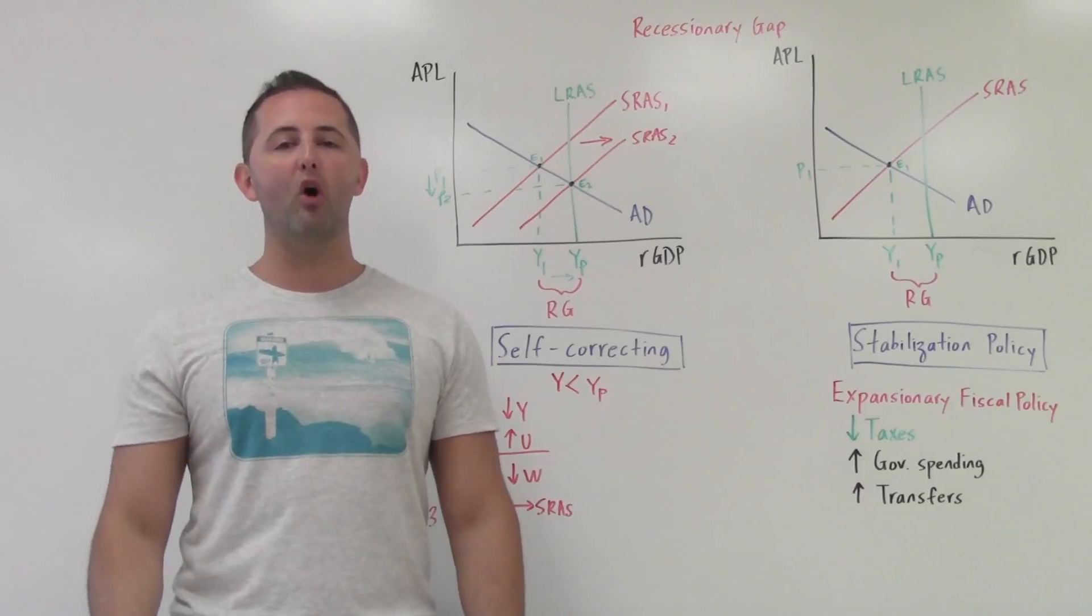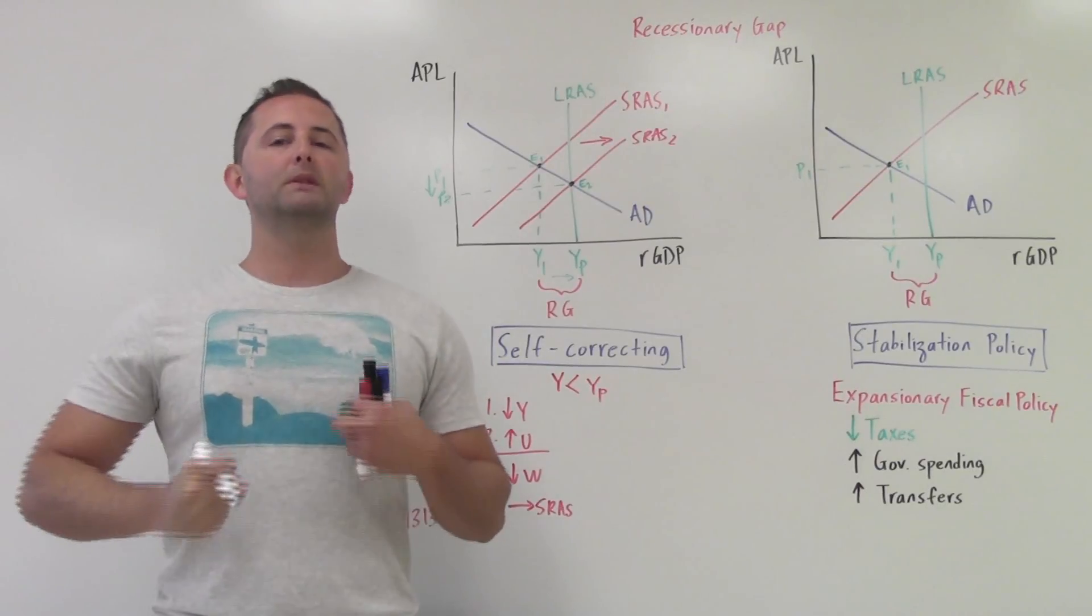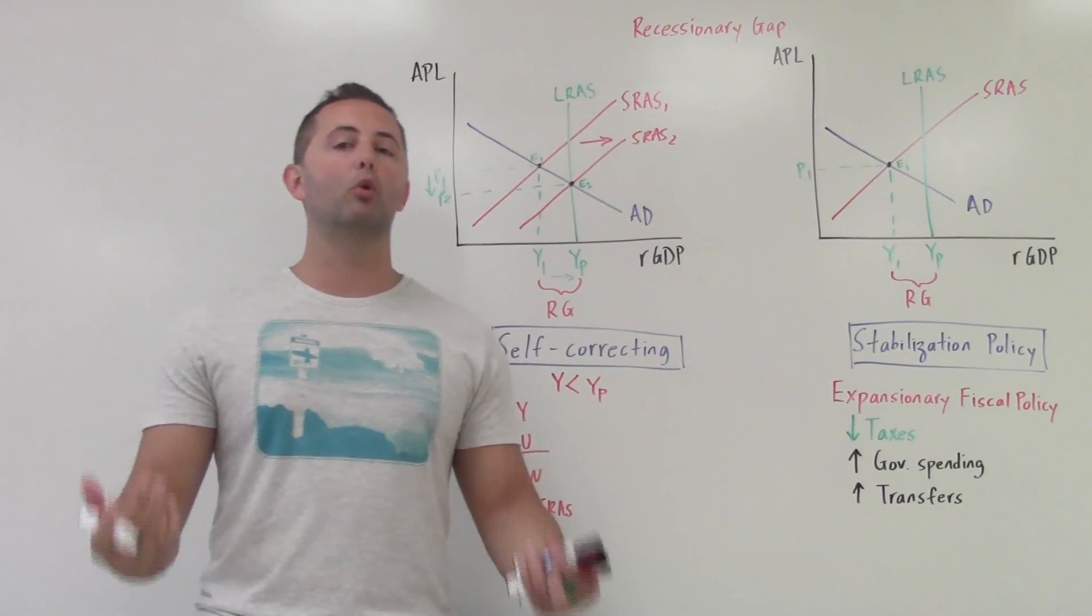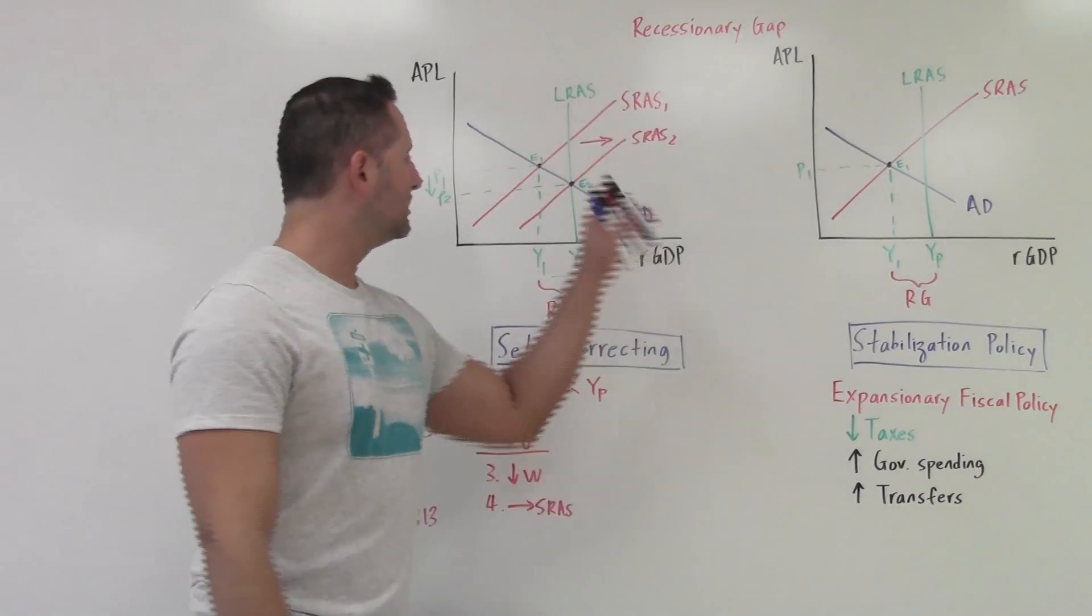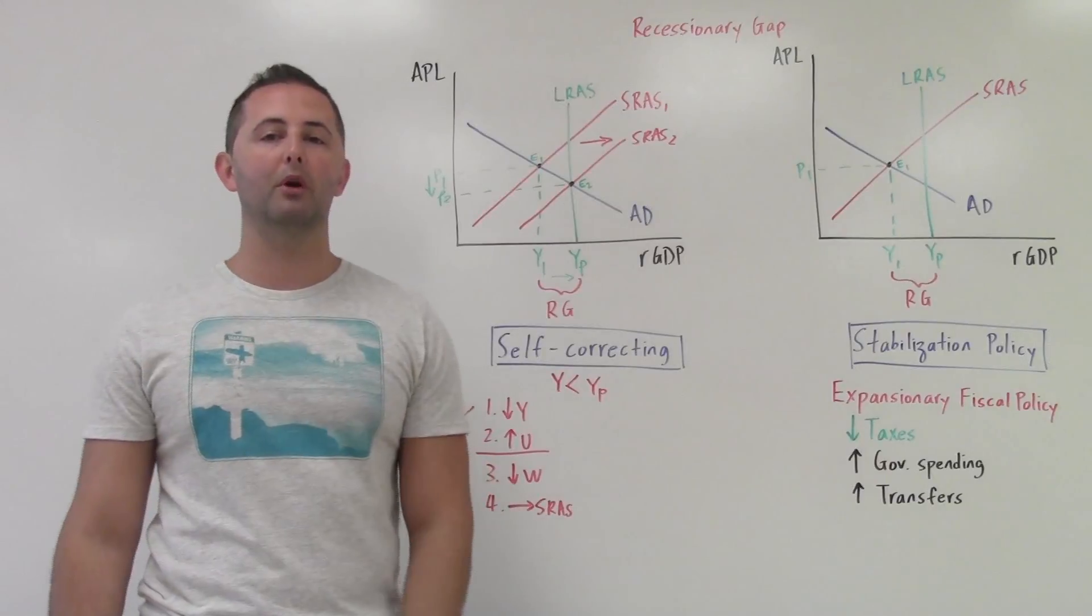Once they stop being sticky and become flexible, those wages are going to fall. When the wages fall, suppliers and producers are able to hire more workers, which will increase short run aggregate supply, bringing us back to our long run equilibrium.